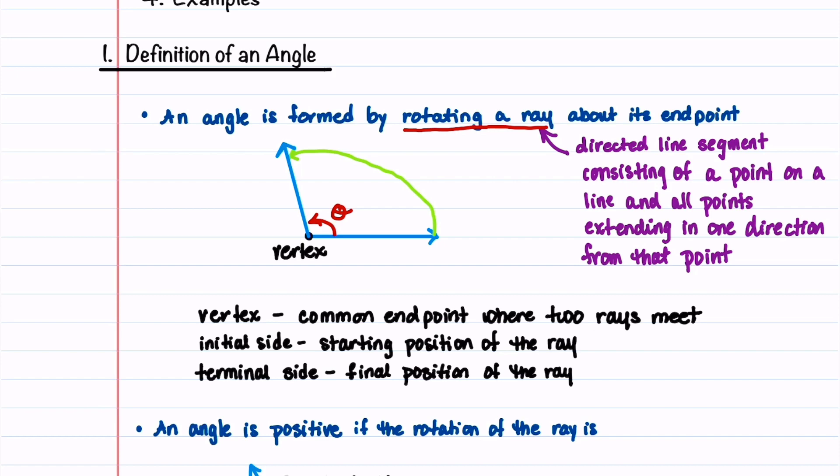The initial side of an angle is the starting position of the ray. We'll label that. And the terminal side of the angle is the final position of the ray. And we'll go ahead and label that.